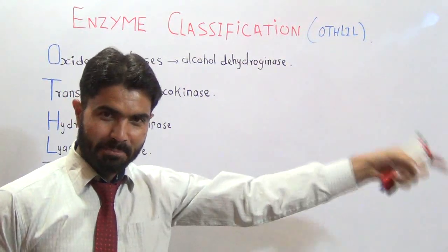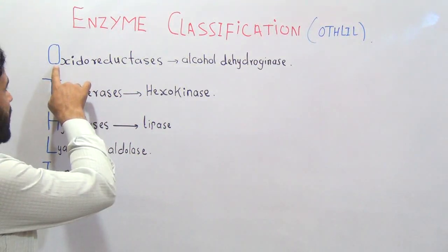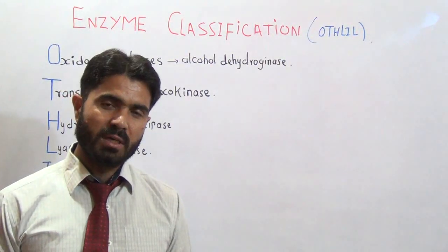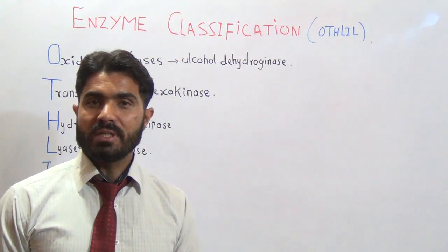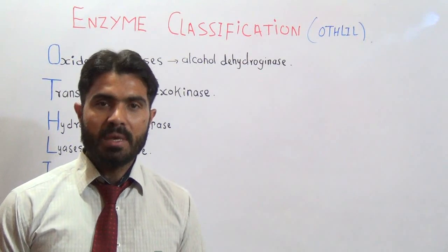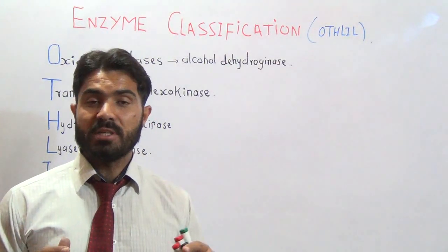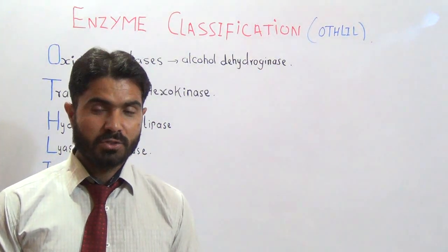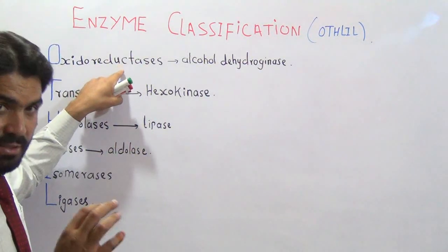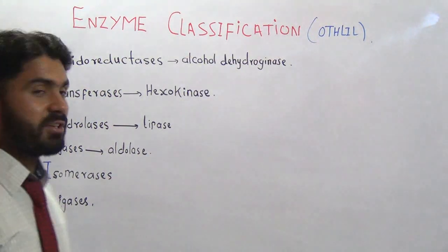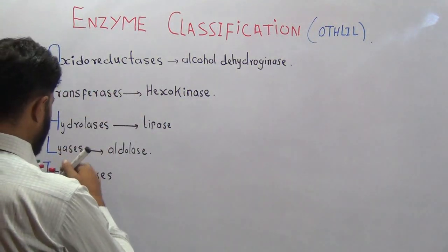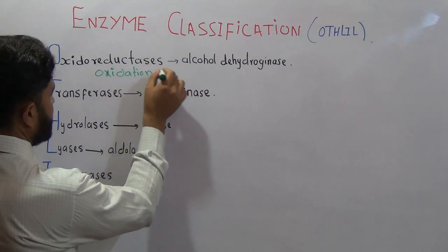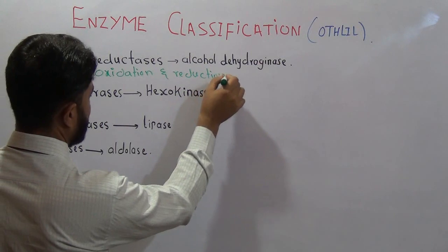Oxidoreductases is the first class of enzyme. Note that oxidoreductases is not the name of a single enzyme — it is a family name representing a large number of enzymes collectively grouped under this heading. These are the enzymes which are involved in oxidation and reduction reactions.